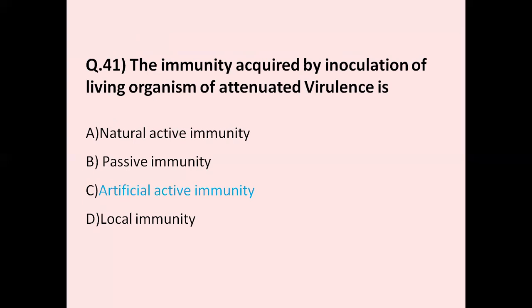Question number 41: The immunity acquired by inoculation of living organisms of attenuated virulence is — option A natural active immunity, option B passive immunity, option C artificial active immunity, option D local immunity. The correct answer is artificial active immunity. Artificial active immunity results from vaccination using dead or attenuated pathogens, which then produces antibodies against the pathogen for later use.